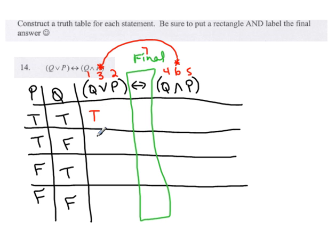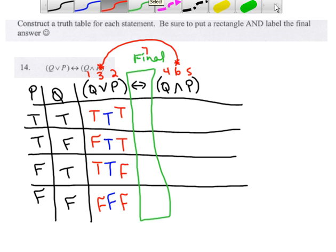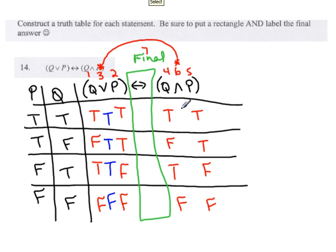Now let's fill it in. Column Q is true, false, true, false. Column P is true, true, false, false. Sing the disjunction song — false or false is false, all else is true. Here's my false-or-false row, the rest are true. Move to the right side: column four is Q — true, false, true, false. Column five is P — true, true, false, false. The conjunction rule: true and true is true, all else is false. Row one is true and true — all else are false.